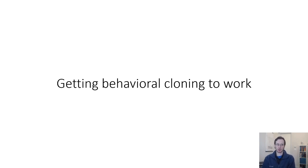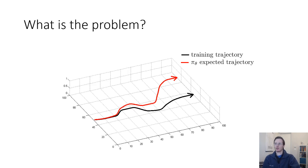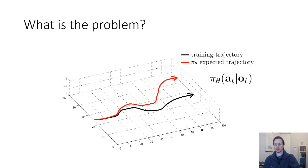In the next portion of this lecture, we'll talk about how we can actually get behavior cloning to work in practice. So what is the problem with behavior cloning? If you understand that problem, maybe we can get some idea of how to make things work better. We can formalize this compounding errors problem as a problem of distributional shift.